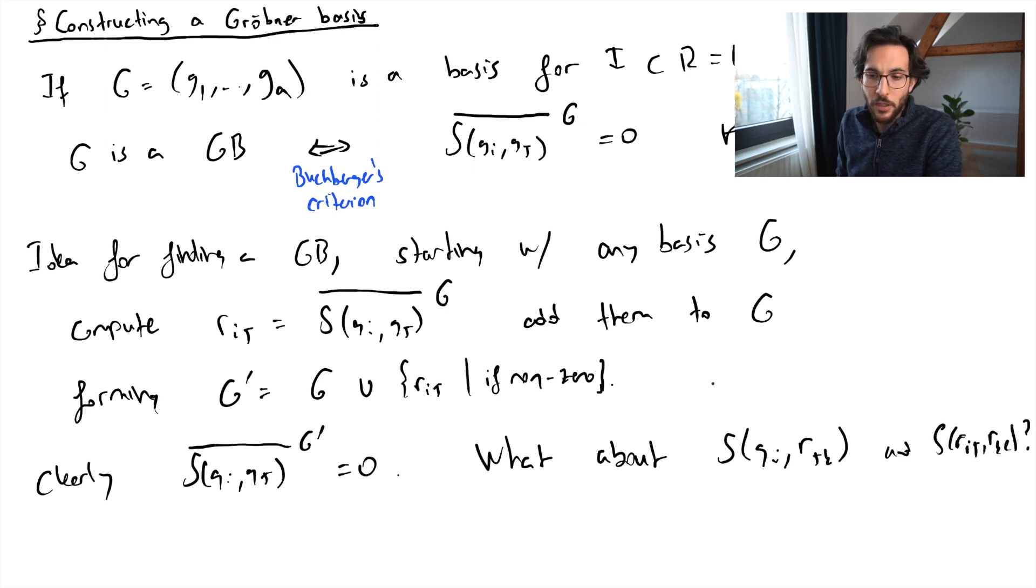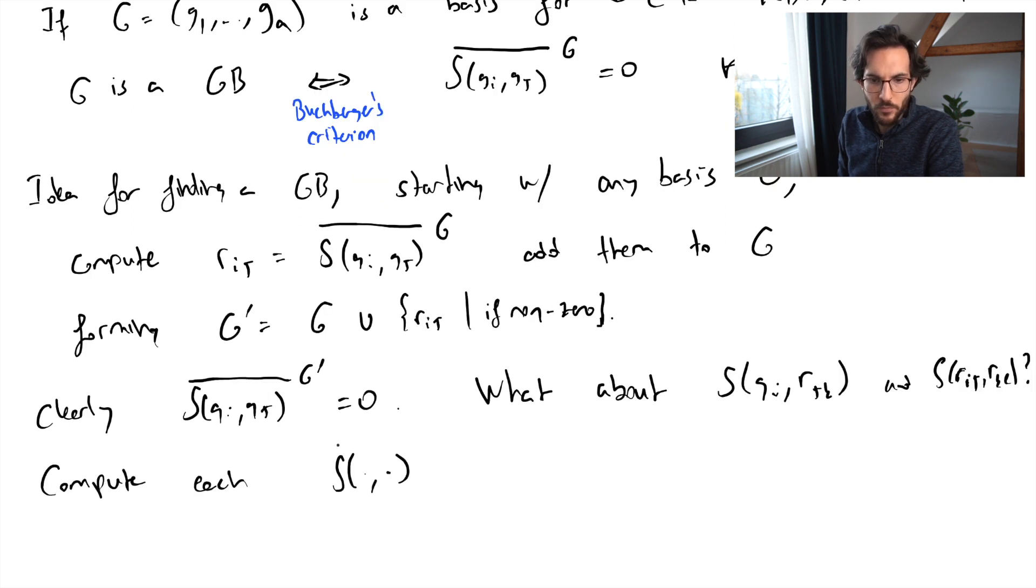There's nothing free here, we also have to compute these s-polynomials and reduce all of them modulo G prime. So the process starts again. We compute these reductions modulo G prime and then add all of them to G prime. Then we have a larger generating set for the ideal and repeat. The question is, will this process terminate?